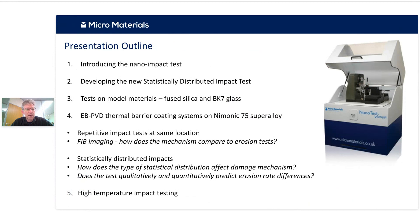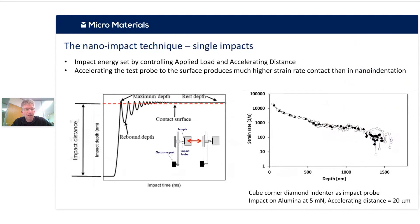Then I'll move on to looking at e-beam PVD thermal barrier coating systems on a superalloy substrate, starting with repetitive tests at the same location — can we get the same damage from our tests that we see in real erosion tests? We've used focused ion beam imaging to get a handle on that. Then I'll talk about the random or statistically distributed impact tests and how the type of statistical distribution affects the damage mechanism, the effect of spacing between impacts, and whether the test quantitatively predicts real erosion rate differences. Finally, I'll cover extending all of this to high temperatures.